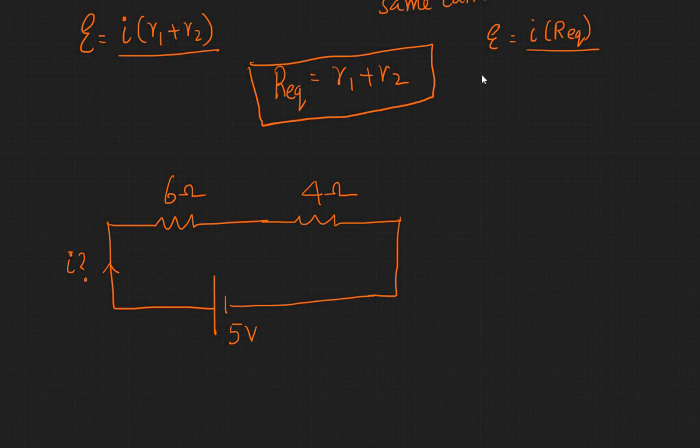And if someone asks you what is the current, all you need to do is you can say my equivalent resistance is equal to R1 plus R2, because they are in series. So this is equal to 6 plus 4, that's 10 ohms.